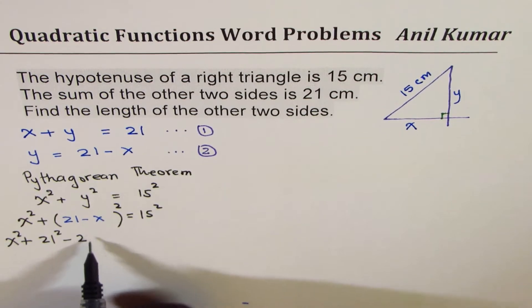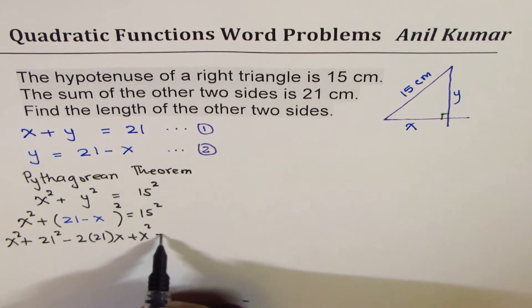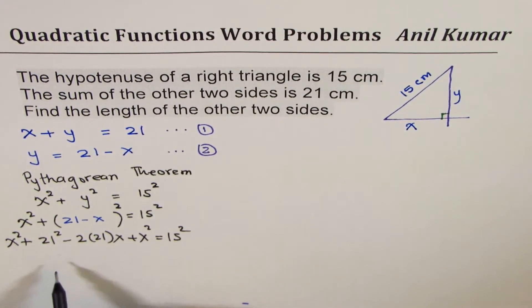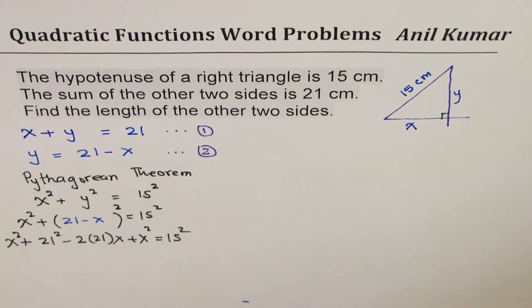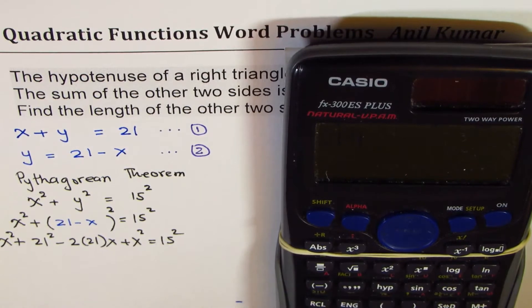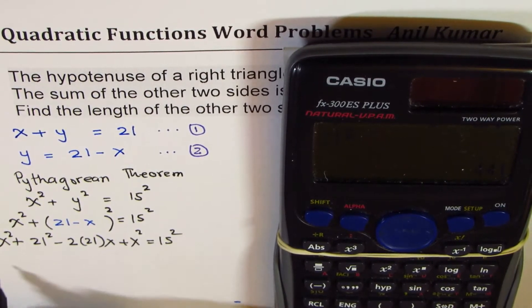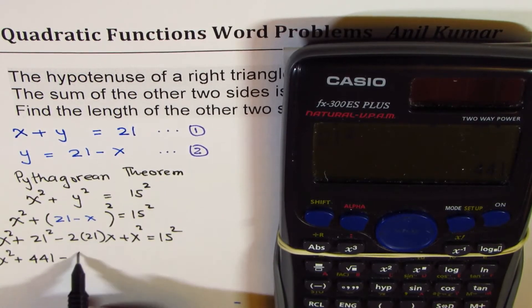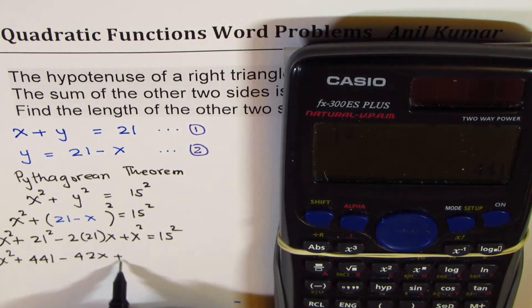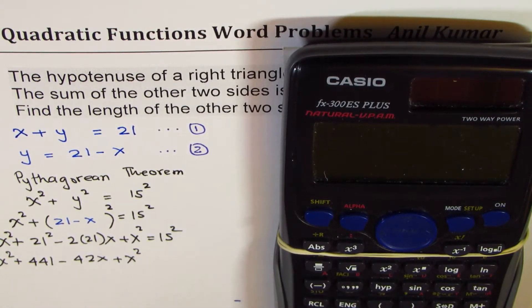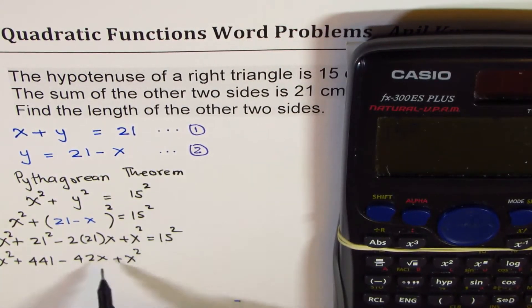So 21² is 441. Let's rewrite: x² + 441 - 42x + x². 15² is 225. Let's bring it to the left side, so minus 225 equals 0.